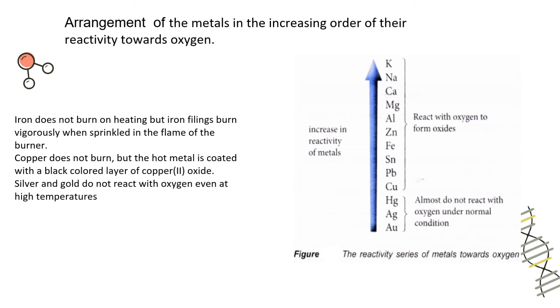Now here are some points I want to share with you. The first point is iron does not burn on heating but iron filings burn vigorously when sprinkled in the flame of the burner. Iron requires a very high melting point to burn. So the flame won't work on iron but definitely iron filings will work here. Second point is copper does not burn but the hot metal is coated with a black colored layer of copper oxide. Now when you burn or heat a copper it won't burn but there will be a layer of black color around the copper you will see. You can try it at home and it is quite easy. Now silver and gold do not react with oxygen even at high temperatures. You can see on their reactivity series that silver and gold are at the bottom of the reactivity series so they are the least reactive towards oxygen. We will talk more about reactivity in our next video lecture.